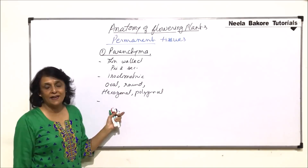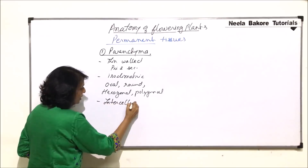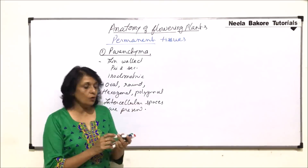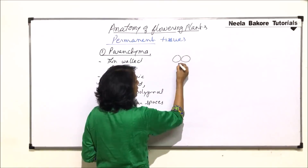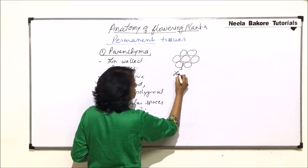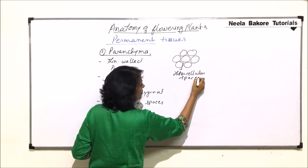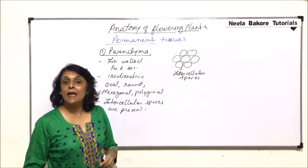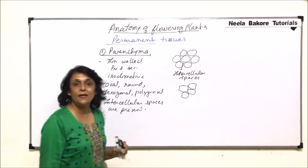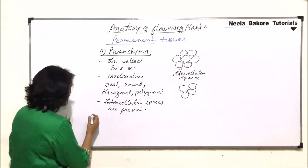Normally, parenchyma cells are loosely arranged and they have intercellular spaces. If we draw these parenchyma cells — say the rounded or oval ones — the wall is thin and the intercellular spaces are visible. If we draw them polygonal or hexagonal, we will also see these intercellular spaces. This is how we draw parenchyma.